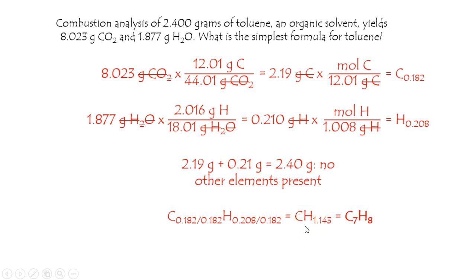It's not until you multiply by 7—we call that scaling—that you get whole numbers. And the answer is the empirical formula for toluene based on this data is C7H8.